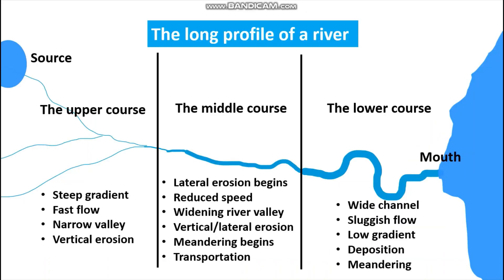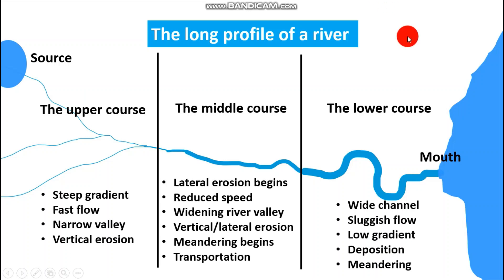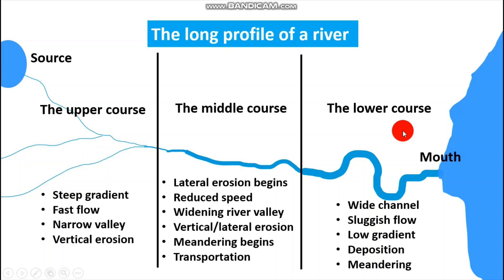What is the relationship between the long profile of a river and its cross profile? At different stages of the river, the cross profile will change. We have V-shaped valleys at the upper course of the river. At the middle course, we have U-shaped valleys which are being developed because of lateral erosion. At the lower course of the river, the river is very wide, forming broad U-shaped valleys. And that is the profile of a river — both the long profile and the cross profile.